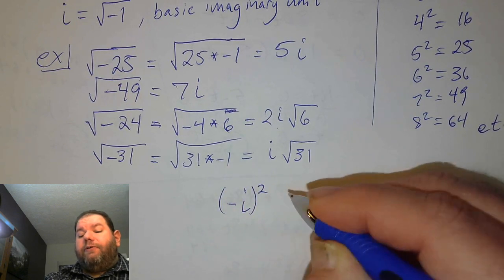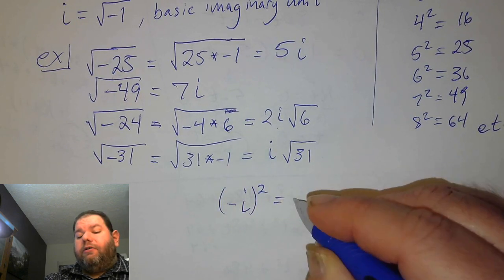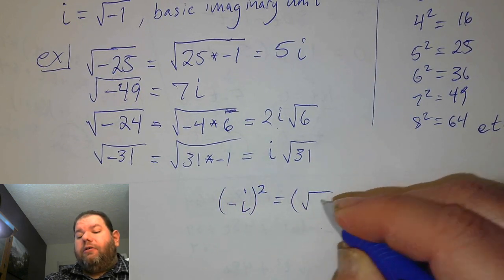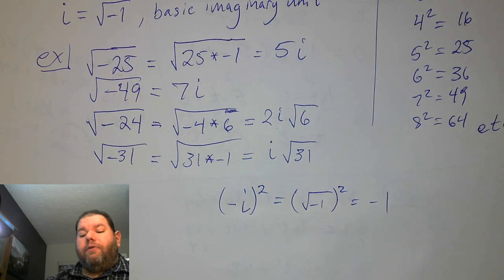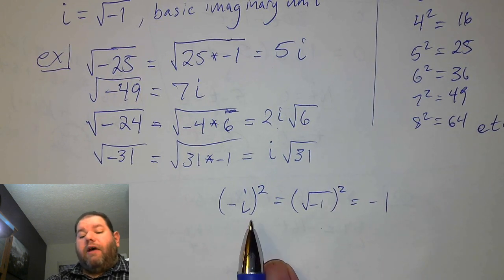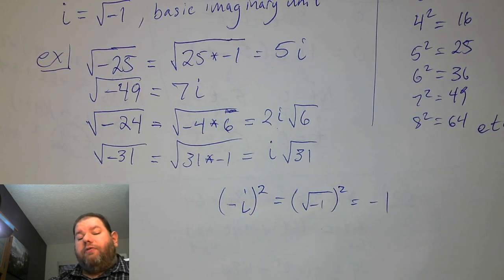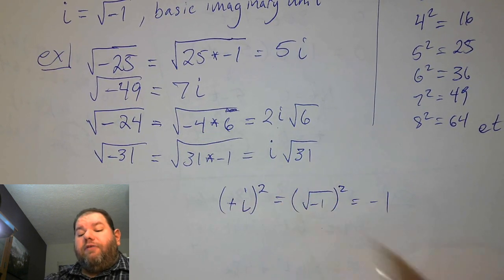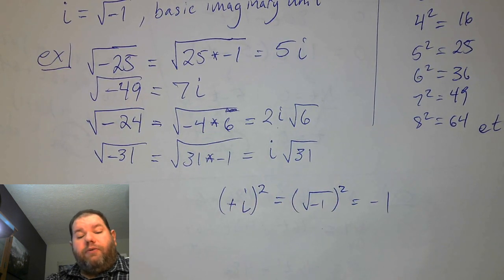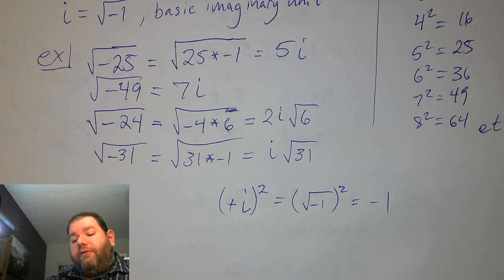If we take i squared, it actually results in negative 1. So i squared equals negative 1.